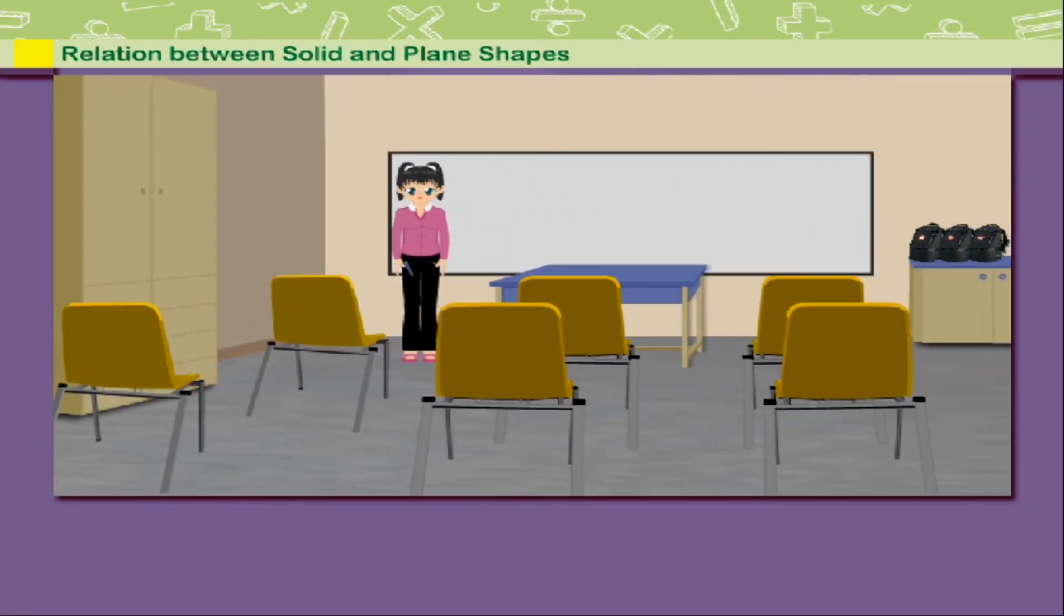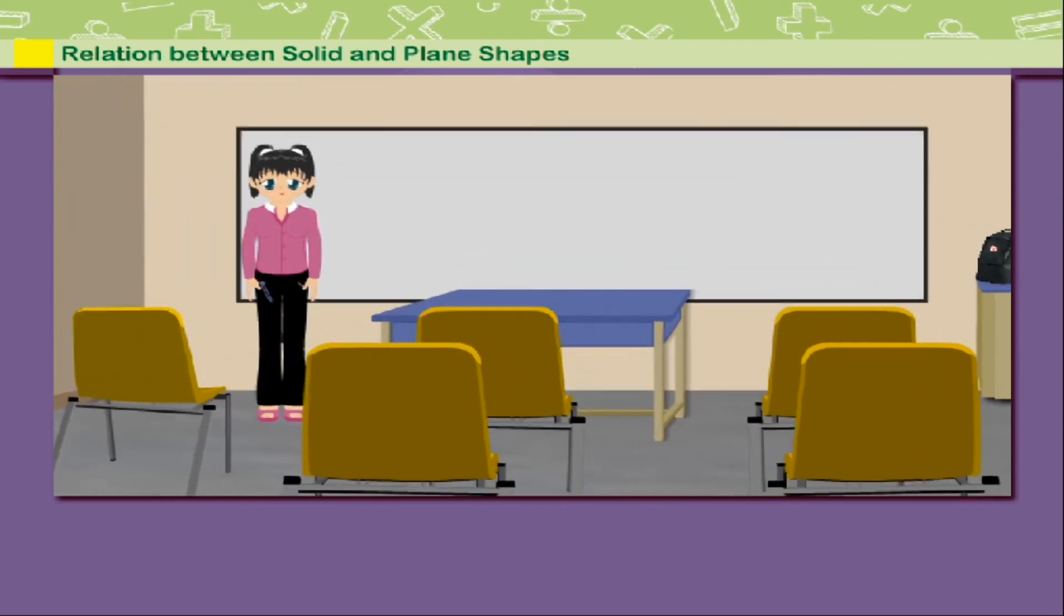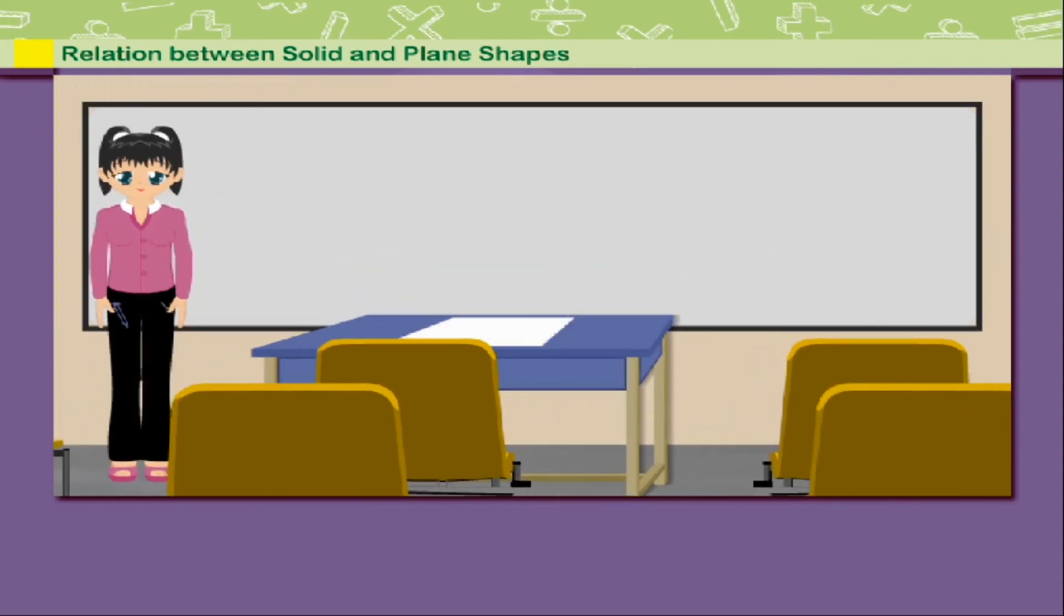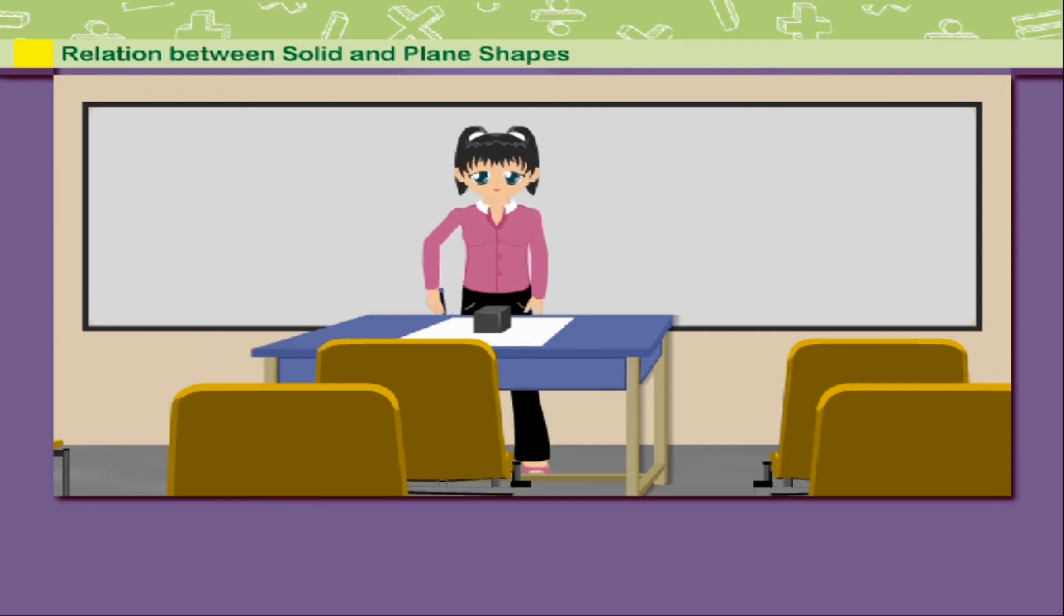Relation between solid and plane shapes. Teacher Judy is in the class. She has a sheet of paper spread out on her table. Down drops a cube on the paper. Teacher Judy traces out its surface on the paper to get a square.